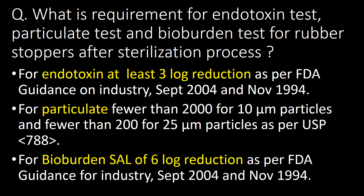What are the requirements for endotoxin, particulate, and bioburden tests for rubber stoppers after sterilization? For endotoxin: at least 3-log reduction as per FDA guidance (September 2004 and November 1994). For particulates: fewer than 2000 particles for 10 micrometer particles and fewer than 200 for 25 micrometer particles, as per USP Chapter 788. For bioburden: sterility assurance level (SAL) of 6-log reduction as per FDA guidance (September 2004 and November 1994).